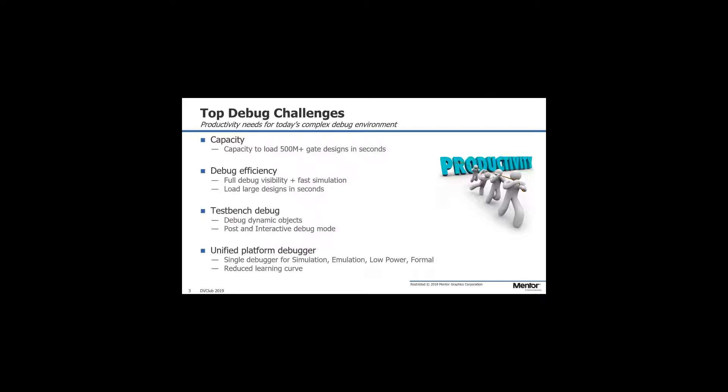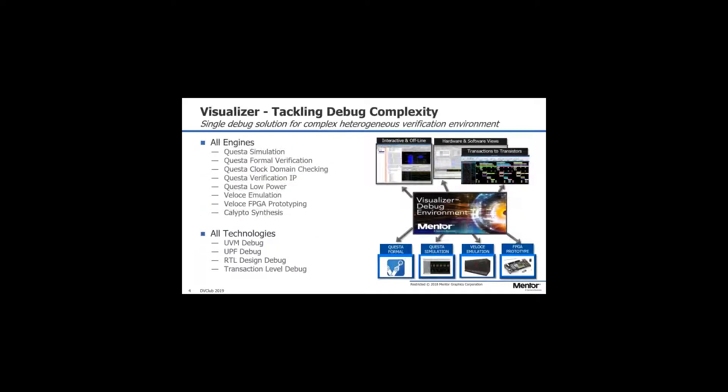You're probably running multiple debug engines — emulation as well as simulation, UPF, formal, FPGA prototyping. What you really want is a unified platform for debug. Rather than learning five different debug tools, just pick up one debug tool and have the same debug for each of the environments. This is kind of where Visualizer sits — it's our relatively new debugger, being rolled out across all our engines, whether it be simulation, formal, low power UPF, or emulation.